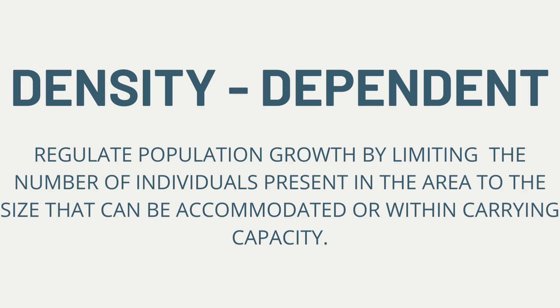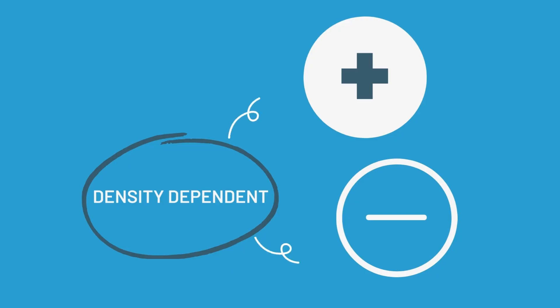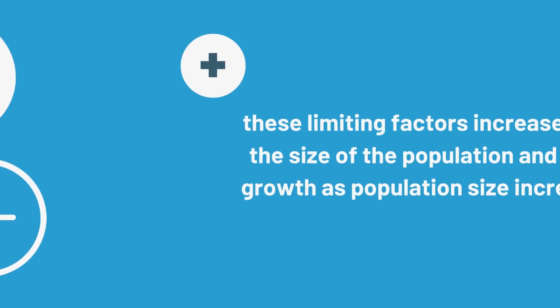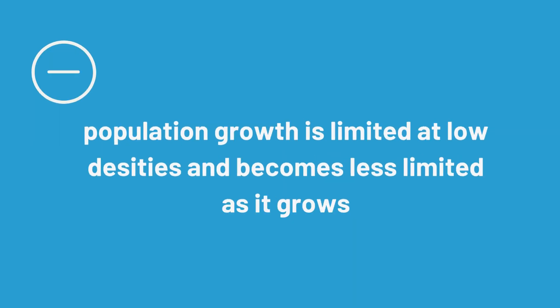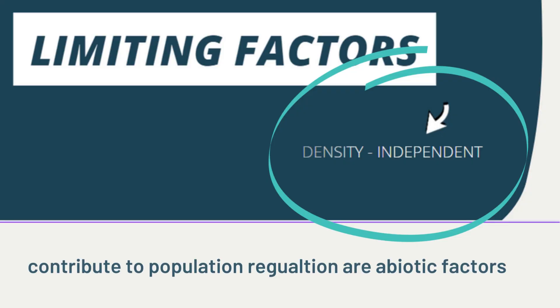Density-dependent factors regulate population growth by limiting the number of individuals present in the area to the size that can be accommodated or within carrying capacity. Density-dependent factors can have either a positive or negative correlation to population size. With a positive relationship, these limiting factors increase with the size of the population and limit growth as population size increases. With a negative relationship, population growth is limited at low densities and becomes less limited as it grows.